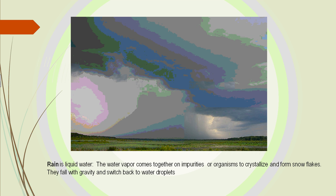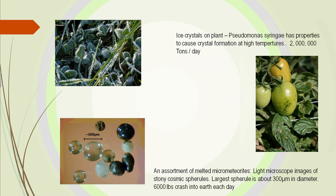Rain is just liquid water. Water vapor comes together on impurities up in the sky, and we need those impurities so that water can crystallize and form snowflakes. One thing we've found is that some of those impurities are actually micrometeorites coming in from the solar system. If you put a magnet in a glass of rainwater, you would see micrometeorites attracted to it.